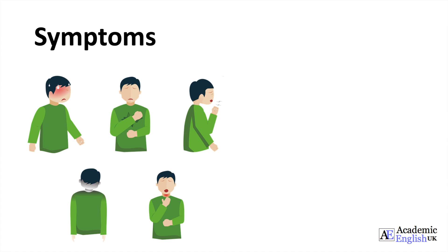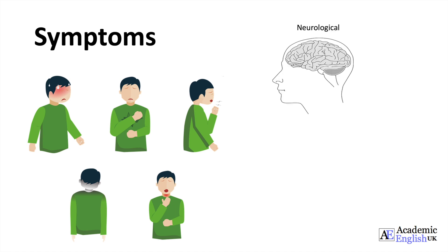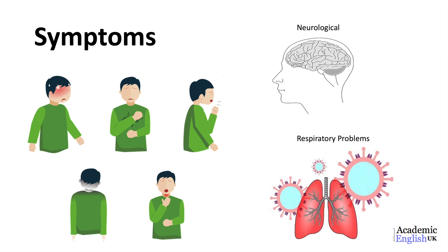COVID-19 also affects brain function in some people. Specific neurological symptoms include loss of smell, inability to taste, dizziness, confusion, seizures and strokes. It's actually the respiratory problems that are the main factor for the high number of fatalities. COVID-19 can cause lung complications such as pneumonia and, in the most severe cases, acute respiratory distress syndrome and sepsis.